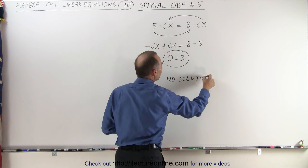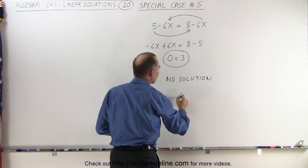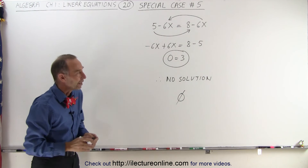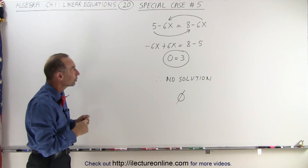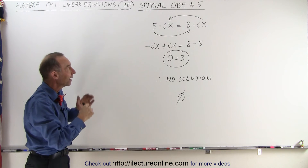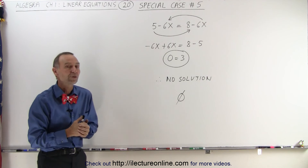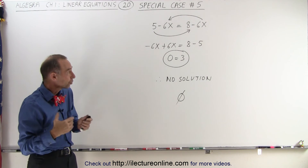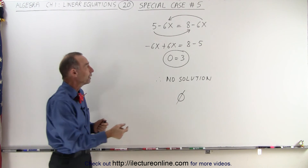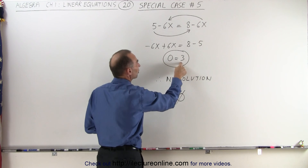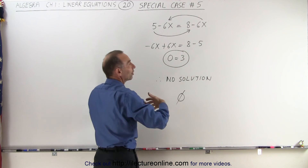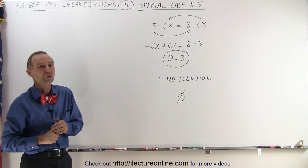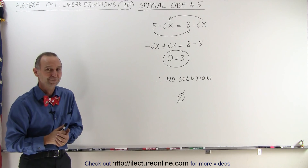The solution set is what we call the empty set. There is no possible value for x that will make the left side equal to the right side. We can conclude that whenever we have two numbers set equal to each other which are not equal, there is no solution. That's how it's done.